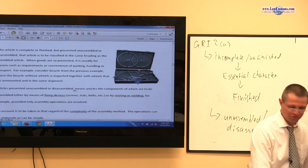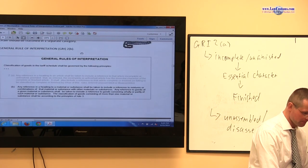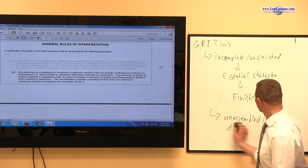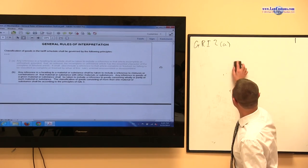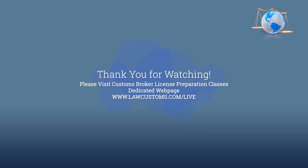So unassembled, disassembled, I already talked about. So you have a bicycle with the parts that are separately. And now we get to the general rule of interpretation D. So GRI to D.